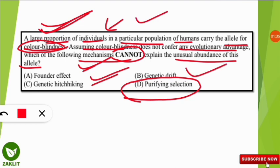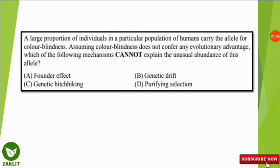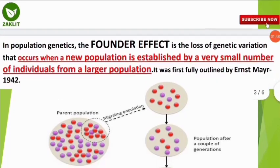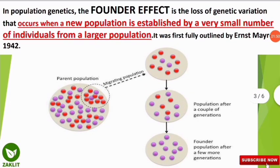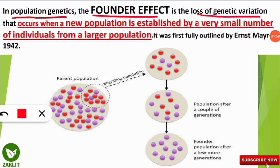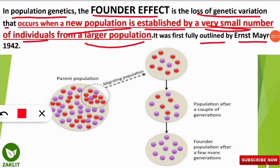Let us understand each concept one by one. First is the founder effect. In population genetics, the founder effect is the loss of genetic variation that occurs when a new population is established by a very small number of individuals from a large population. It was first fully outlined by Ernst Mayr in the year 1942.